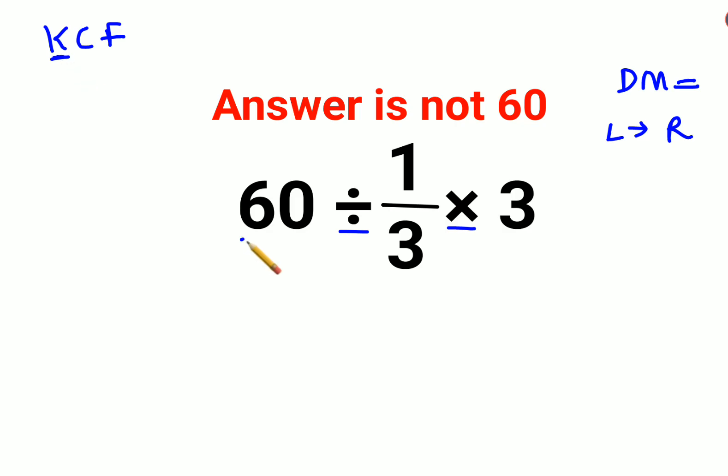K means keeping the first number as it is, that is 60. C stands for changing the division sign to multiplication. F stands for flipping, or taking the reciprocal of 1/3, which is 3.